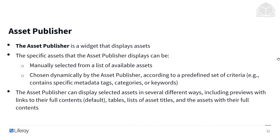The specific assets that the asset publisher displays can be manually selected from a list of available assets — we can choose what should be shown — or they can be chosen dynamically by the asset publisher according to a predefined set of criteria. We can define which metadata tags, categories, or keywords to use and let the asset publisher take over from there. It depends on how much control you need.